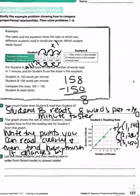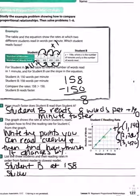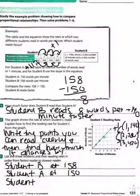List the three students and their reading rates in order from fastest reader to slowest reader. So the fastest reader is student B at 158, and then student A at 150, and then student C at 140.